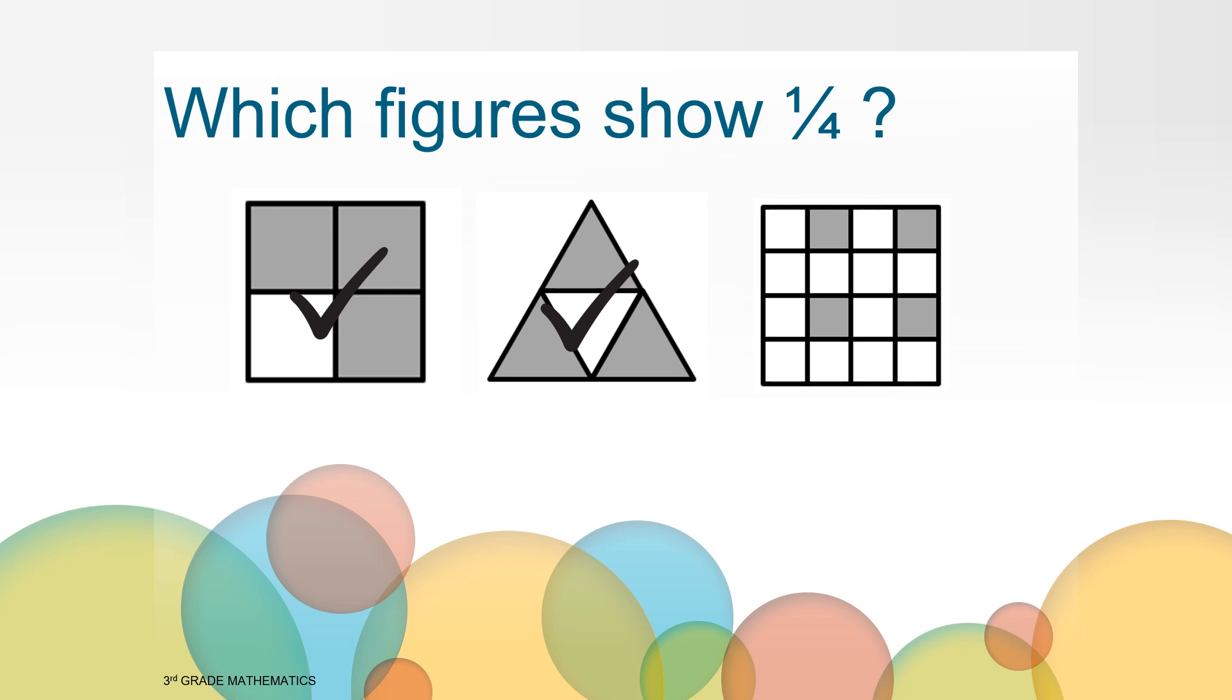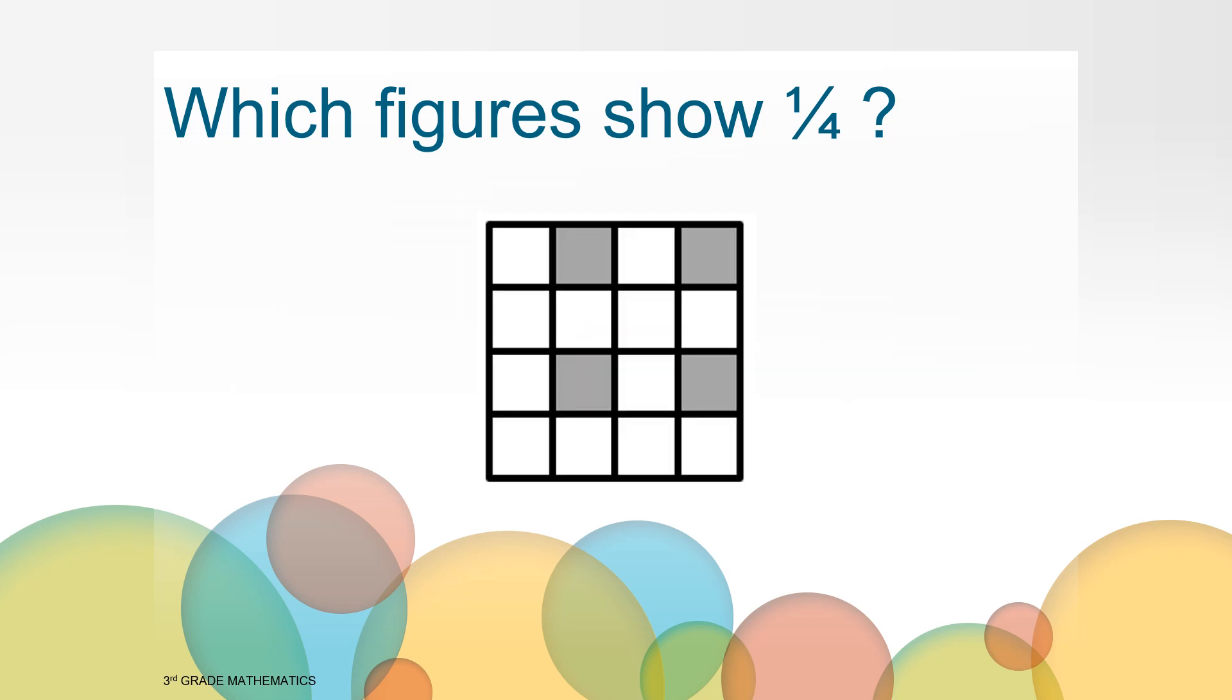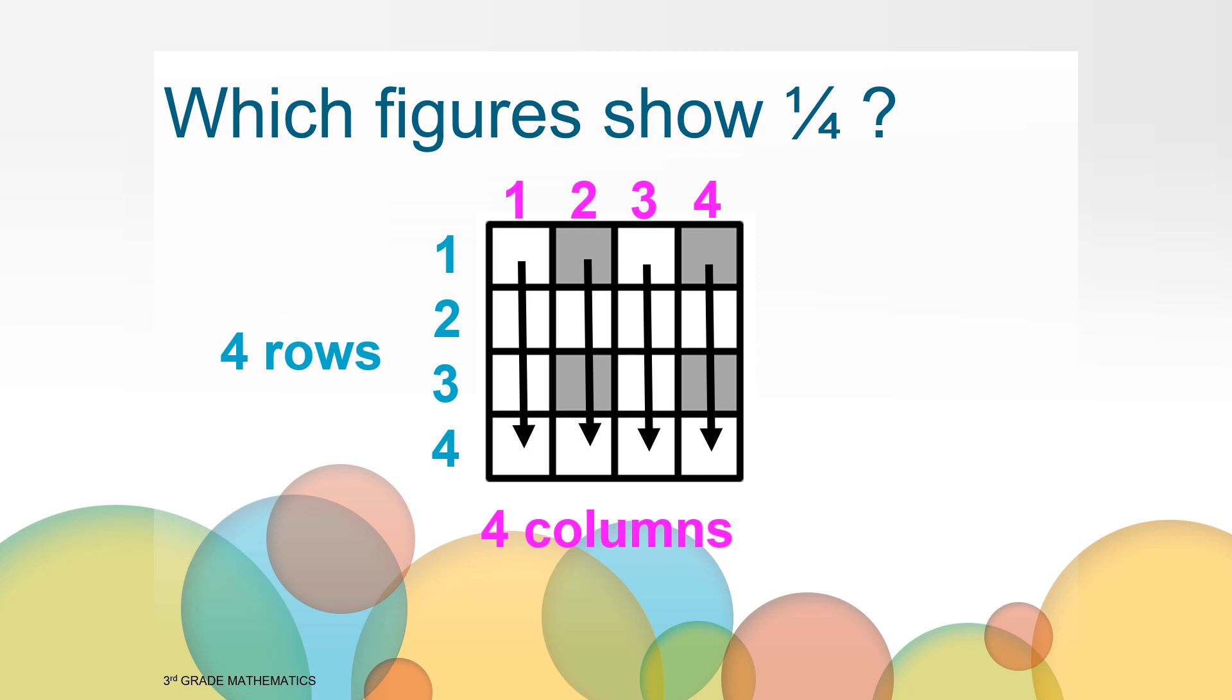Let's move on to our last shape. What do you notice about this figure? Here we see another square. This square has four rows. It also has four columns.